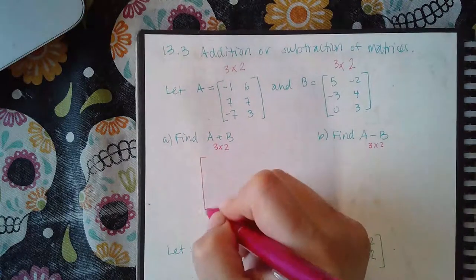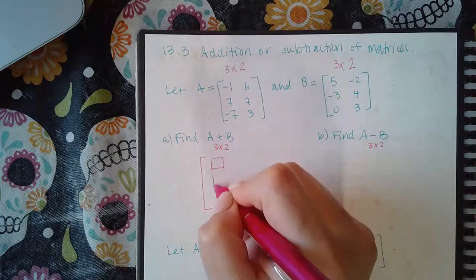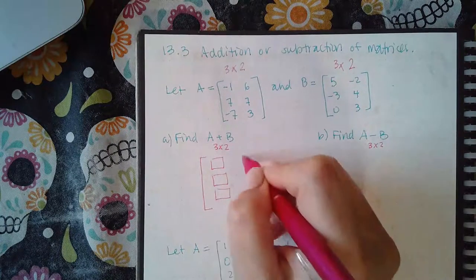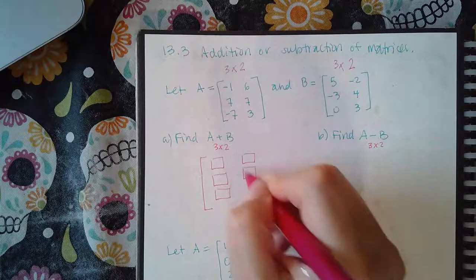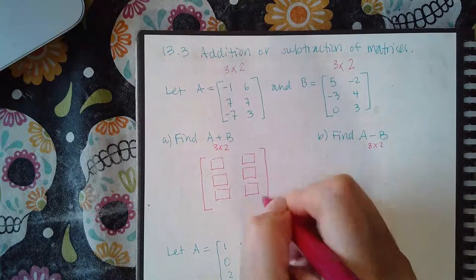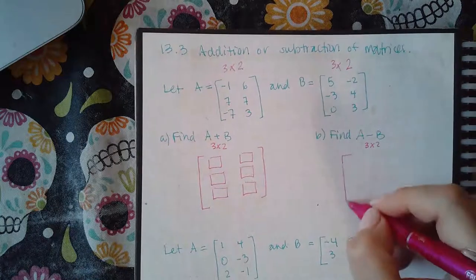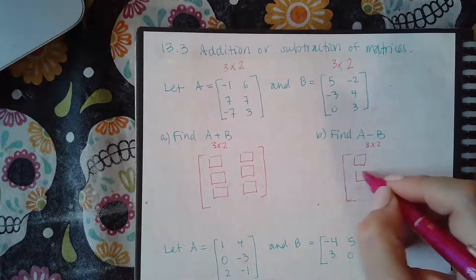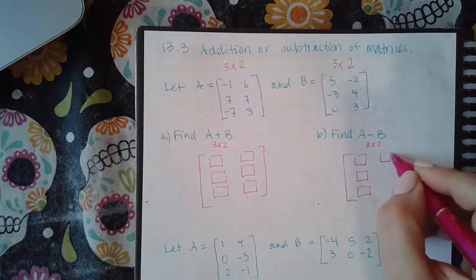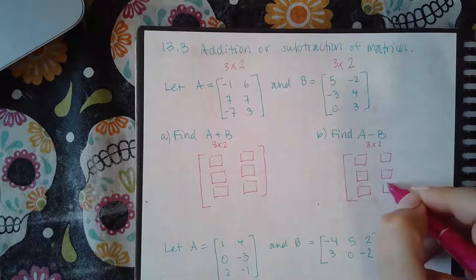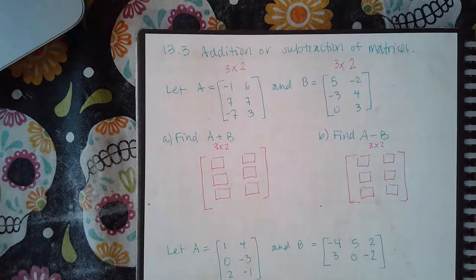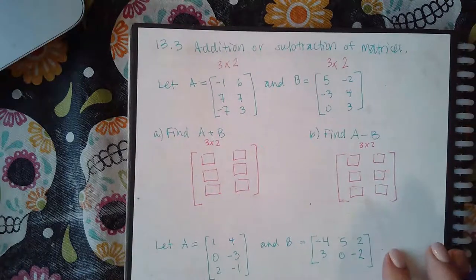And so then, when I go into the computer, I will select this option here, which is a three row by two column matrix, and the same over here. And then now it's just a matter of filling in the blanks.